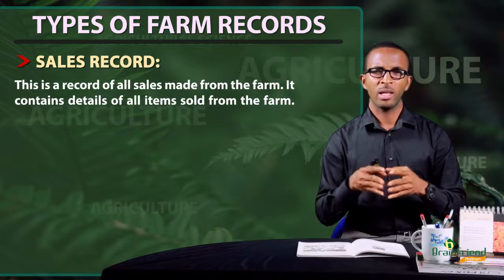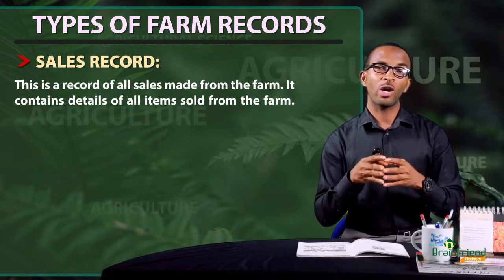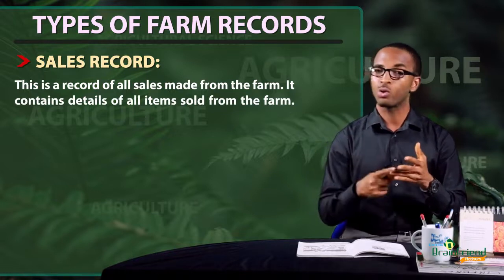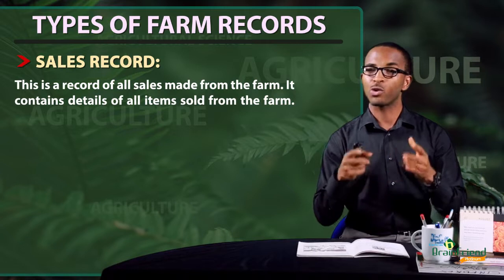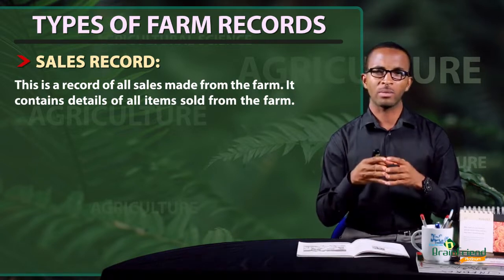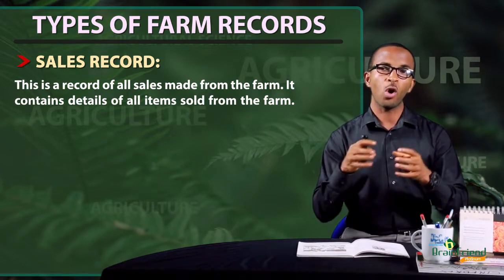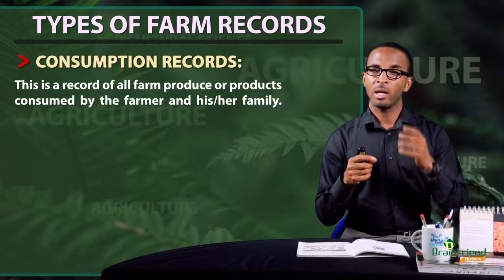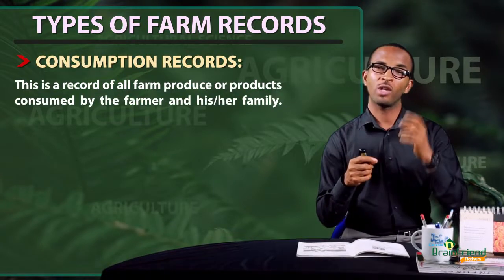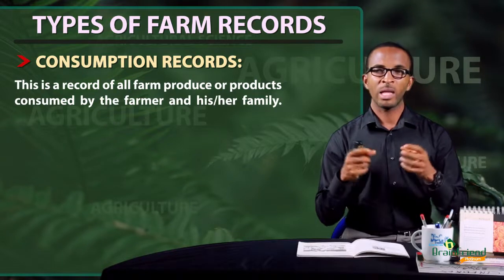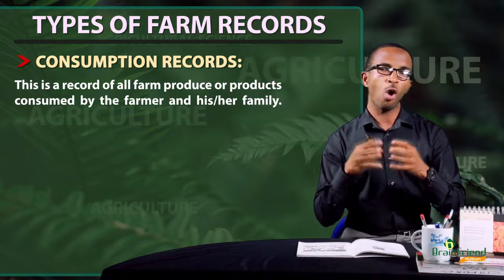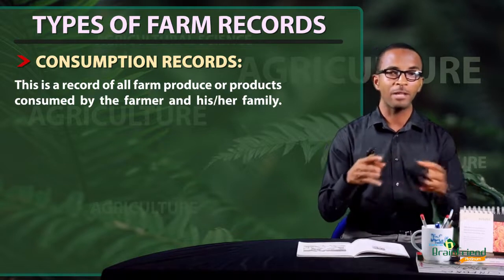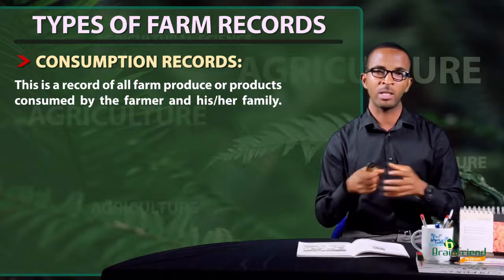Sales record: this is the record of all sales — be it chicken, goats, or crops — that were sold from that farm. It gives the details of all items sold from the farm and their prices. Consumption record: this record contains all farm produce or products that were consumed by the farmer and his family.